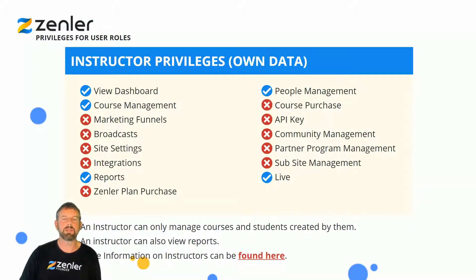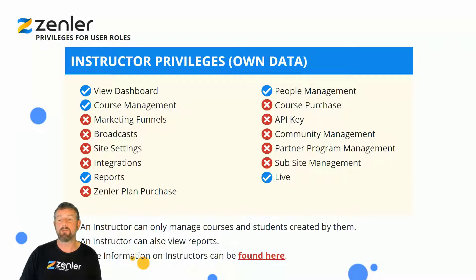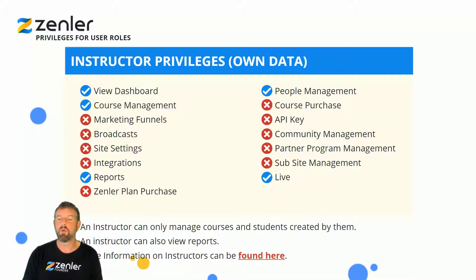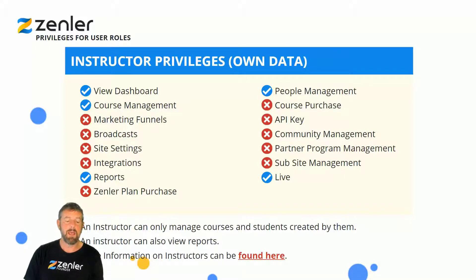Moving to instructor privileges — if you've got an instructor working for you, they'll be able to view the dashboard, have course management, create courses, view reports, handle people management, and access live. What they won't have access to is marketing funnels, broadcast, site settings, integrations, Zendler plan purchase, course purchase, API, community management, partner program, and sub-site management. An instructor can only manage courses and students created by them, and can also view reports.